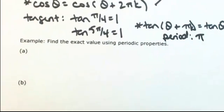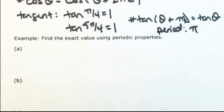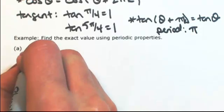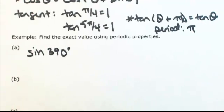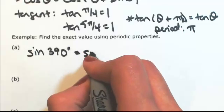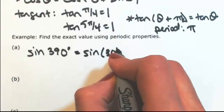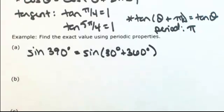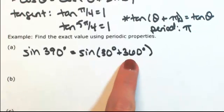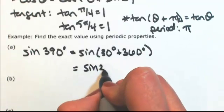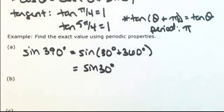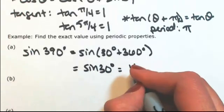So let's find exact values using periodic properties. Let's say I have the sine of 390 degrees. This could be rewritten as the sine of 30 degrees plus 360 degrees. 360 degrees is the same thing as 2 pi radians. So because the period of sine is 360, we're going to end up in the same spot as 30 degrees. So this is just 1 half.